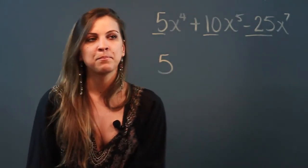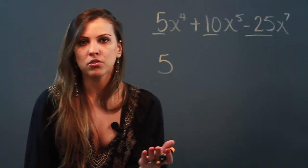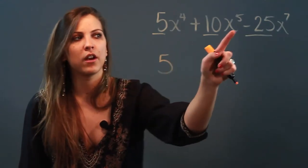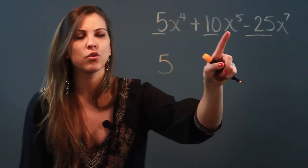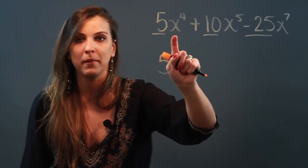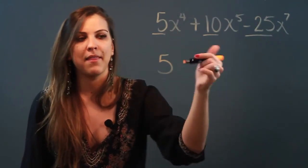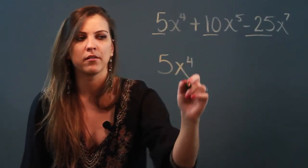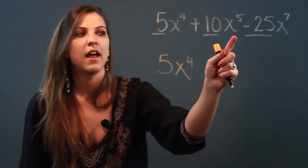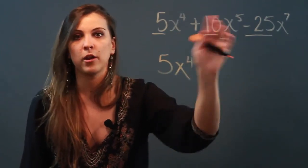That's the first thing you want to pull out. Once you've found the numerical GCF, then you want to look at your variables and see what is the greatest number of x's that I can take from each of these three terms. That is going to be x to the fourth power, because I can take four x's from here, I could take four from here, and I could take four from here, but no more than that.